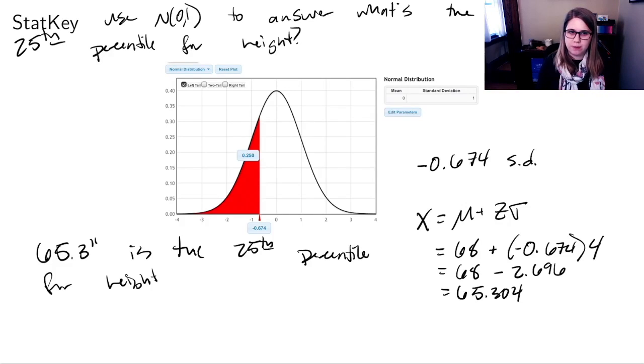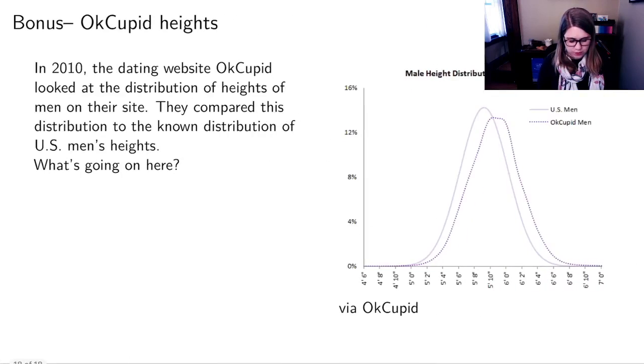There are typically a bunch of questions about this material, about the normal distribution. So please bring your questions to synchronous class. I'm just going to leave you with one more thing to think about, which is data from the dating website OkCupid. This is getting kind of old now. It's from 2010. And what happened was the dating website looked at the distribution of men's heights of male users on their website or people who identified as male. And then they compared that distribution to the known distribution of US men's heights. So we know that height is one of the few things that follow the normal distribution. And there's a known distribution of how men's heights in the United States are distributed. And then they made this plot that I have on the slide. And what I'd like you to think about before synchronous class is what does this plot show? What's going on here? And then we can chat about that in class.